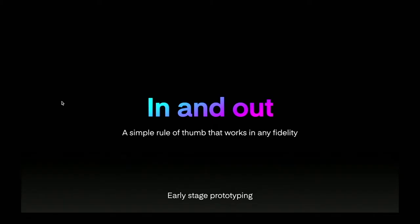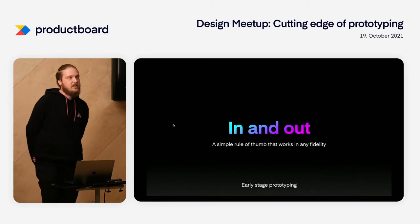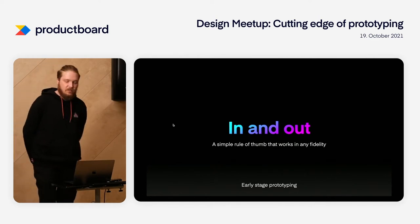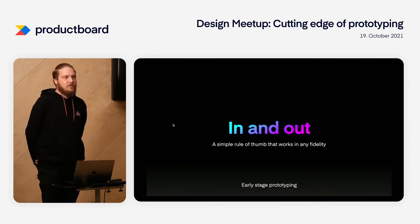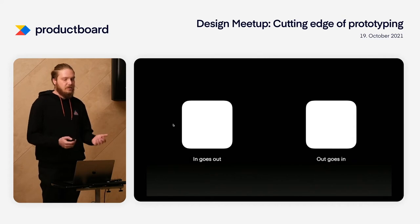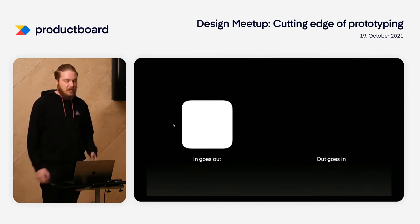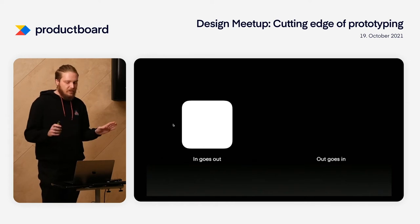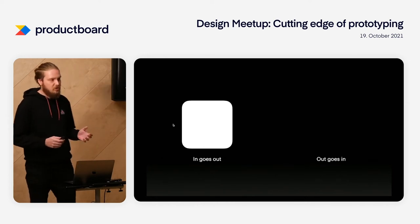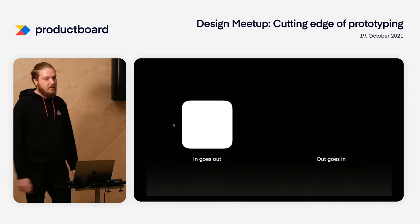A quick rule of thumb for low fidelity prototyping: if you're in a tool that doesn't support complex motion — like prototyping in Keynote with only a few easing options — everything that enters the screen goes ease out and everything that exits the screen goes ease in. If you take this safe assumption, your prototypes are going to look at least a little bit better in low fidelity, rather than just using linear animation.